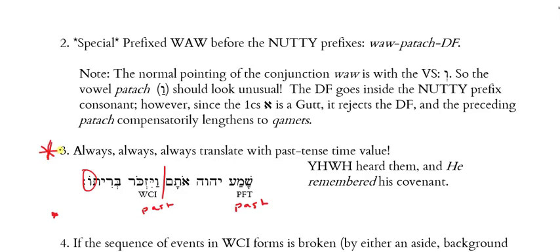Whenever you see that doubling dot and that patah under the vav, you're looking at a WCI form. Third, and this is important — always, always, always translate these with past-time value. The perfect tense is usually past but sometimes can be present; the imperfect tense is usually future but could be past or present. WCIs are always past tense. You haven't heard me use the word 'always' very much in Hebrew, so this is the case: we're looking at past-time action when we see a WCI form.